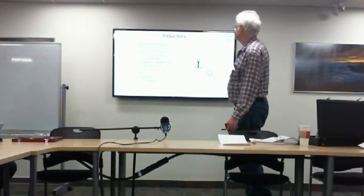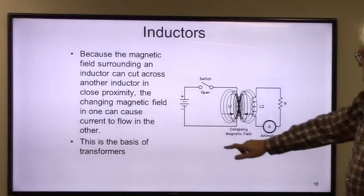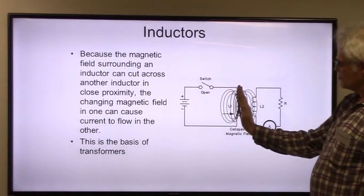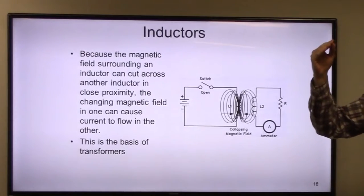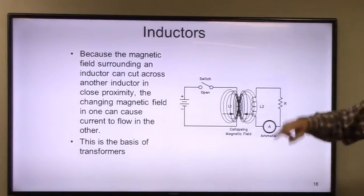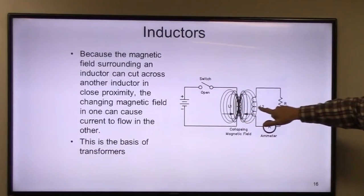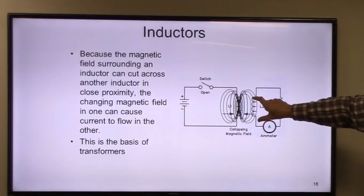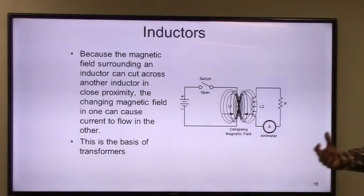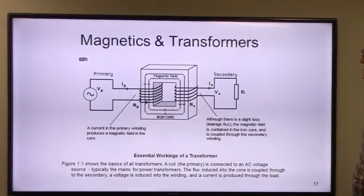The magnetic field surrounding an inductor can, if in close proximity to another coil, induce a current into that coil. The field is constantly changing — building up, collapsing, changing polarity. That changing magnetic field can induce a current into another coil which is in close proximity, and that is the basis of a transformer — basically an advanced form of an inductor.